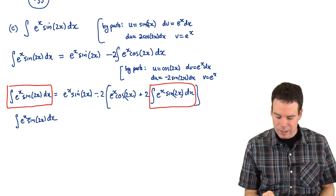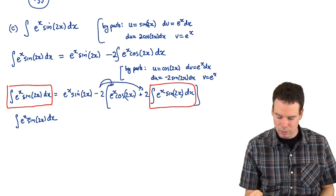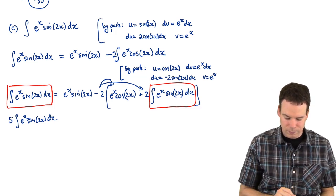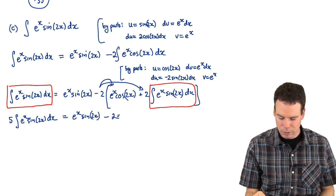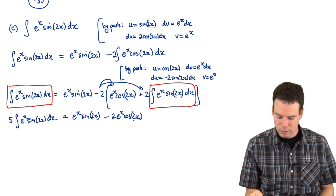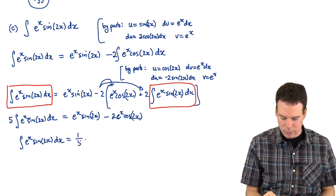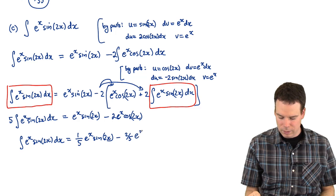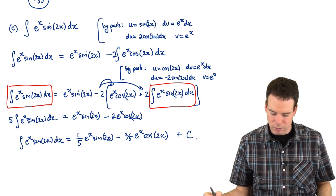We had two of them, negative four of them on this side. This thing would multiply into both of those. So I have negative four of them over here, one of them over here. So when I move the one on the right over to the left, I get five of them is equal to e to the x sine 2 x minus 2 e to the x cos 2 x. And now I can divide both sides by five. And I get a one-fifth e to the x sine 2 x minus a two-fifths e to the x cos 2 x. And we have our plus an arbitrary constant on the end. And so there's our result.